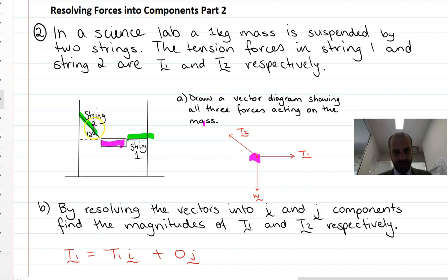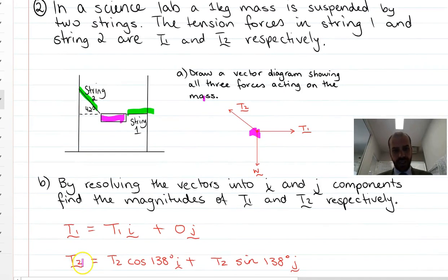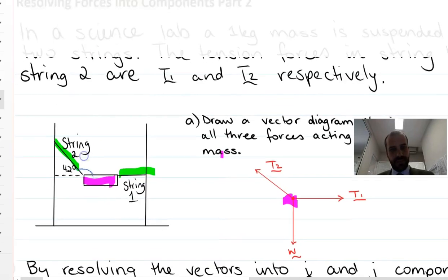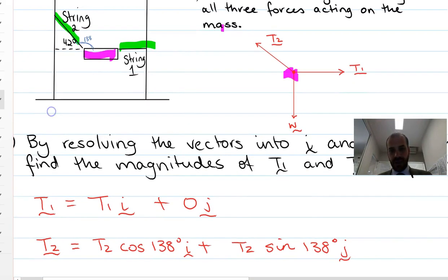Now the second string, we need to use a little bit of our trigonometry again. Tension two is going to be equal to tension two cos 138 in the i. Now why 138? Because we measure our angle from the positive direction of the x-axis. So there's 138 right there. Alright, so that's where we get 138 from.